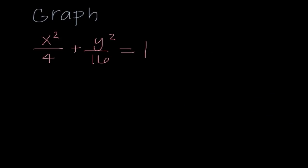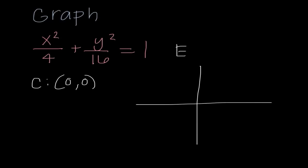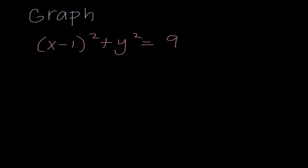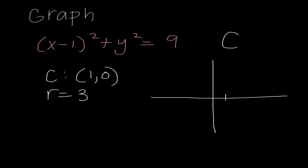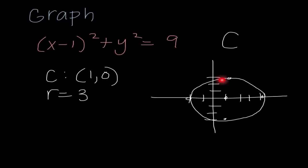This next problem looks similar but has addition, so it's an ellipse. The center is (0, 0). The x denominator tells me to move right 2 and left 2; the y denominator tells me to move up 4 and down 4. I connect those four points to sketch the ellipse. The final graphing problem is a circle with center (1, 0) and radius 3 — taking the square root of the given value. I start at (1, 0) and move out 3 in all directions. On the test this section is matching, so you won't graph by hand.